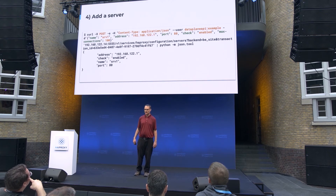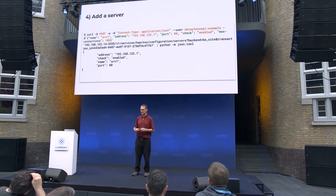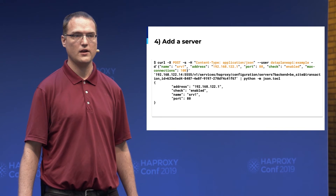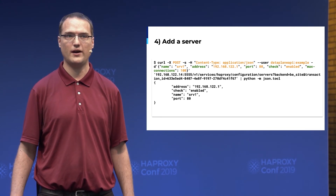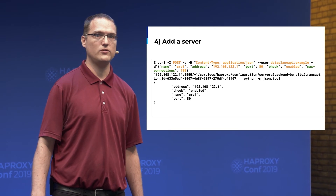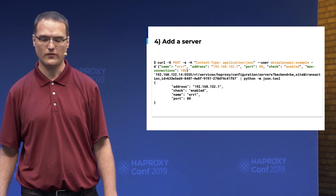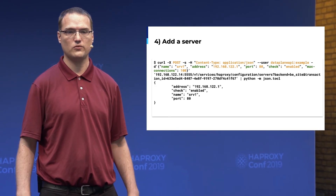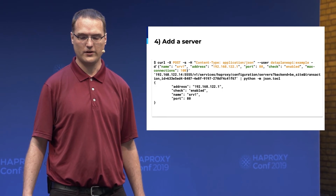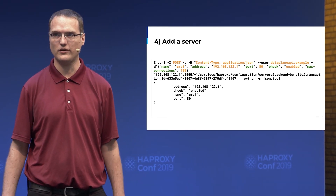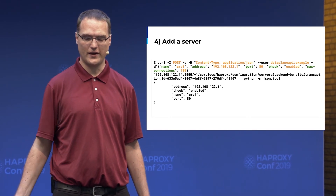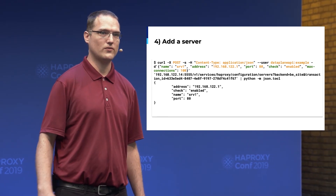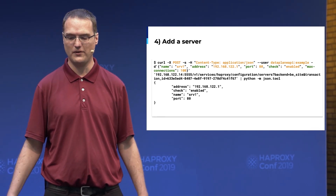Next we add a server to the new backend. This is a bit more complicated as there are a number of different options. If you want to add say 10 servers, you can do that using an array so you can add a whole bunch at the same time with a single request, or you can add a single server. This works the same way whether you're doing it to an existing backend or a new one as part of a transaction. You can also specify the usual SSL options if you want to talk to your backend over SSL, restrict ciphers, and so on.